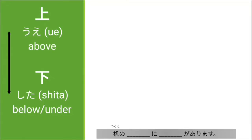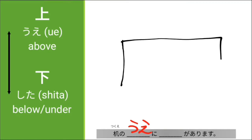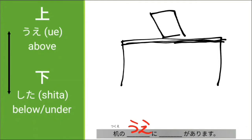So, dito we have an example sentence: 'Tsukue no [blank] ni [blank] ga arimasu.' We can use Uwe first. Drawing tayo — we have the tsukue, ito kumari yung table. For example, meron tayong libro dito — a 'hon' (book). So: 'Tsukue no uwe ni hon ga arimasu.' So, meron daw tayong libro sa ibabaw ng table.